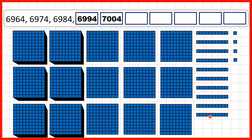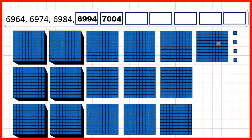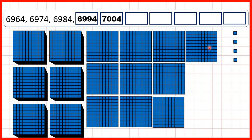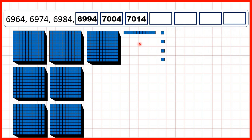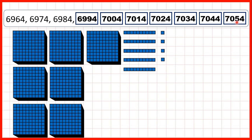But adding one more ten takes us to 7,004. That's because we now have ten tens. And if we have ten tens, we can exchange those for one extra hundred. But doing that means we now have ten hundreds altogether, so we can exchange those for one extra thousand. So because we've added ten, we now have no tens, no hundreds, but we've made one extra thousand because we've exchanged. And the ones digit, as always when we're adding tens, stays the same. Then we can keep on counting in tens until we get to 7,054.